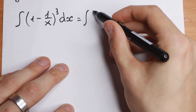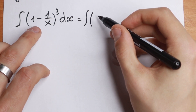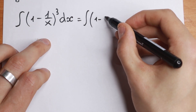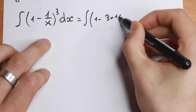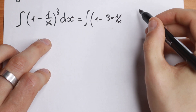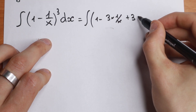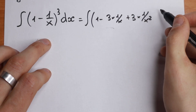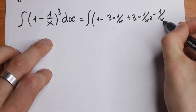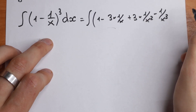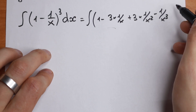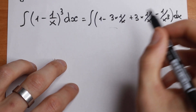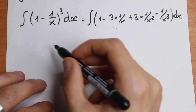So let's use the classic binomial cube formula. When we raise (1 - 1/x) to the third power, we get: 1 - 3·(1/x) + 3·(1/x²) - (1/x³). This is the classic formula, and I'll rewrite it in a clearer way.